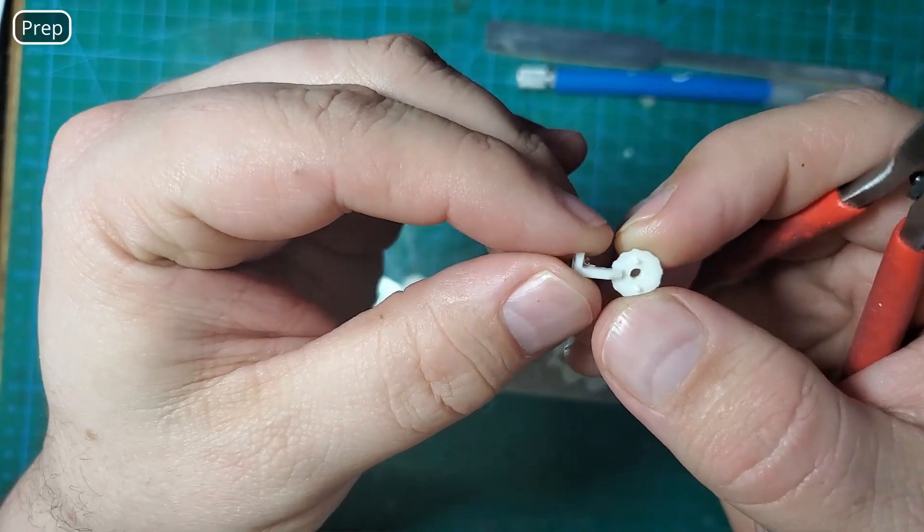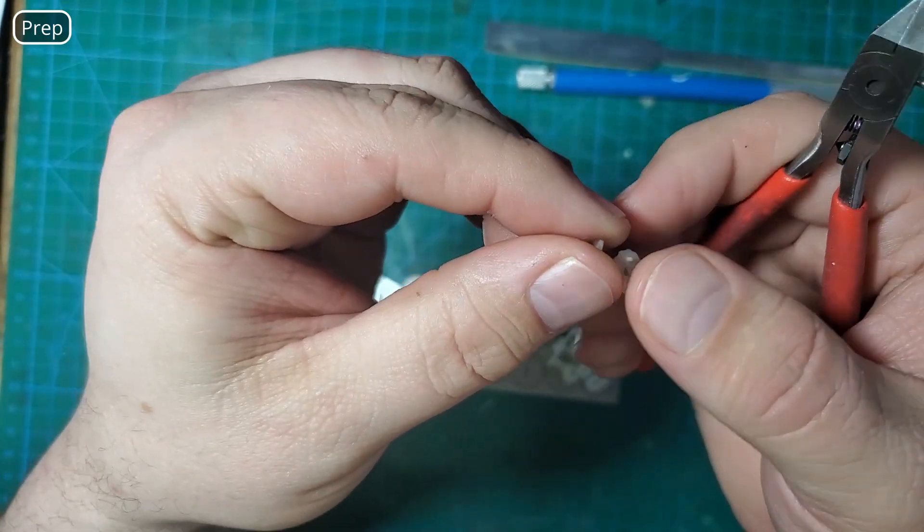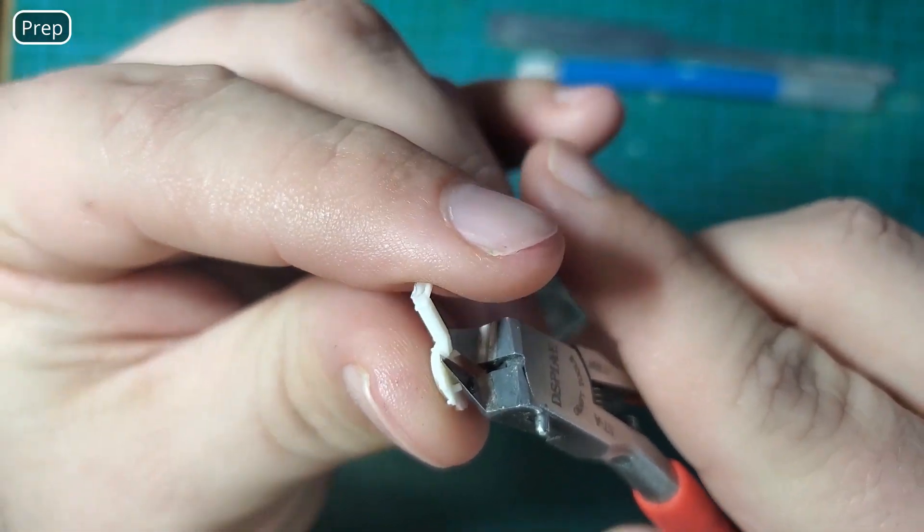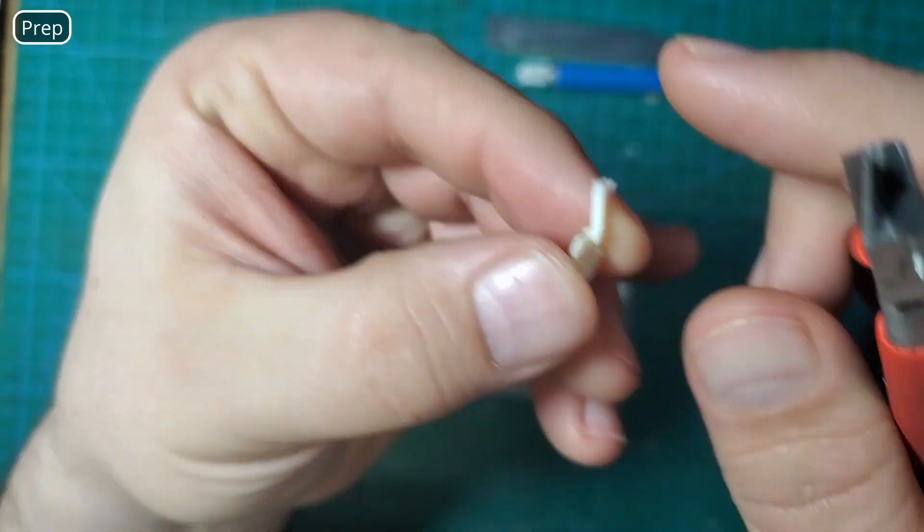Once the parts are washed and dried we need to cut them off the sprues and do a little bit of cleanup. My understanding is resin dust can be hazardous so you should be using a mask when you're cutting or sanding resin parts.